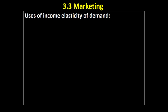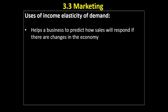So what would a business actually use income elasticity of demand to do? The main thing is to predict how the sales of that business will respond if there are changes in the economy. Incomes are a reflection of the strength of an economy — as an economy gets stronger, incomes tend to rise. A business looking at a rosy economic picture, with incomes going up, will want to have a luxury product that consumers will start consuming more of as their incomes rise. It will also help them set sales targets in a boom or a recession.